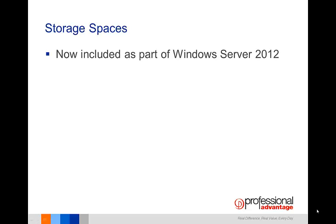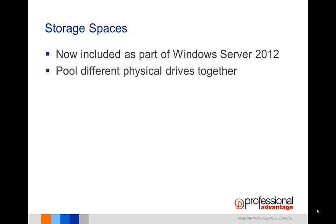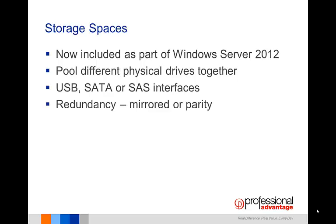Storage Spaces is a Windows Server 2012 technology which easily allows administrators to pool different physical drives together into one logical drive. This functionality allows drives of any capacity connected by USB, SATA, or SAS interfaces to be seen by Windows Server 2012 as one large drive. Once you create a storage pool using two or more drives, you can set up one or more spaces that will be seen by the operating system as a logical drive which can be formatted, partitioned, and used just like a physical disk. To provide redundancy, you can apply either the mirrored attribute, which stores a copy of every file on at least two different physical drives, or the parity attribute, which uses some drive space to store redundancy information.